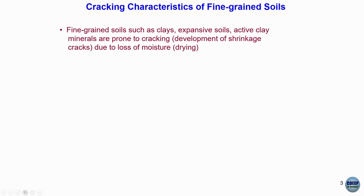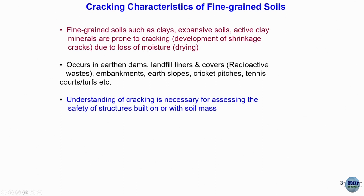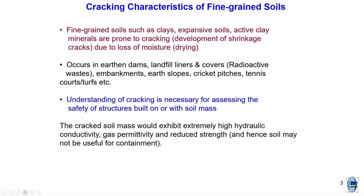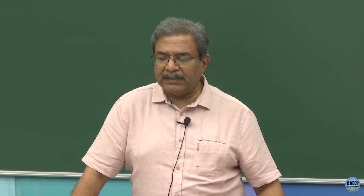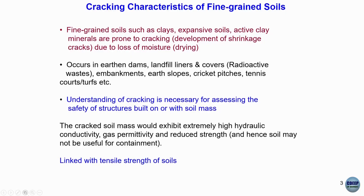Fine-grained soils such as clay, expansive soils, and active clay minerals are prone to cracking — development of shrinkage cracks due to loss of moisture or drying, which is the desiccation process. It might occur in earthen dams, landfill liners, covers, embankments, earth slopes, cricket pitches, and tennis courts — everywhere you are using soils and minerals. Understanding cracking is necessary for assessing the safety of structures built on or with soil mass, because of changes in porosity, permeability, and migration of different types of mass flux. The cracked soil mass exhibits extremely high hydraulic conductivity, gas permeability, and reduced strength, so soil may not be useful for containment facilities.